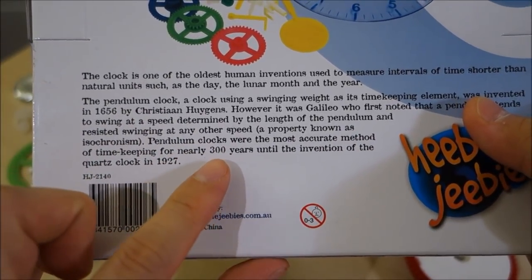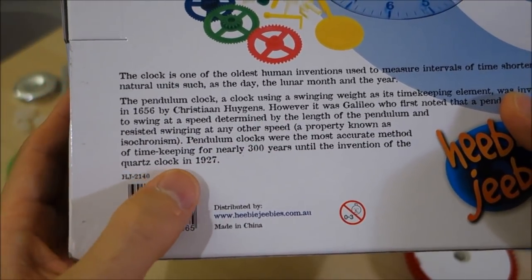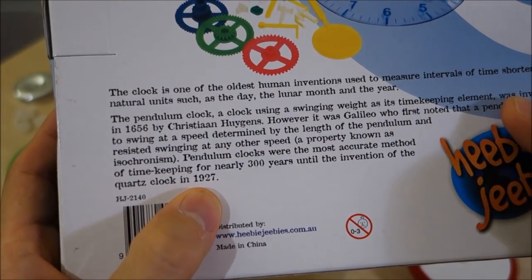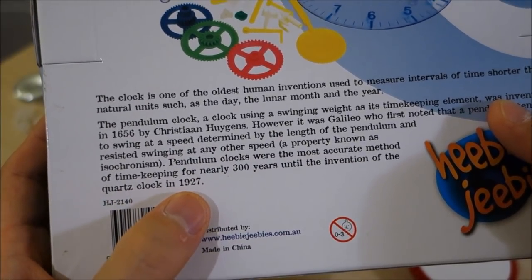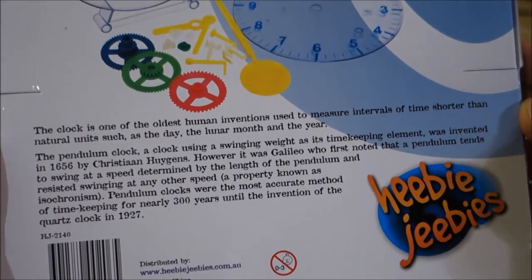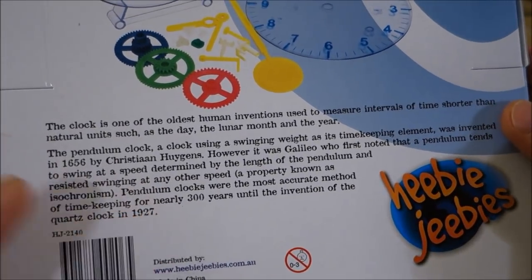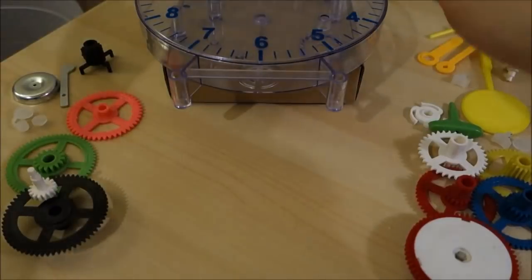Pendulum clocks were the dominant method for nearly 300 years until the quartz clock was invented in 1927. Now that is further back than I knew. I thought it was a bit later than that, so 90 years of history of quartz timekeeping. Now of course wristwatches were a bit later, but clocks 1927.